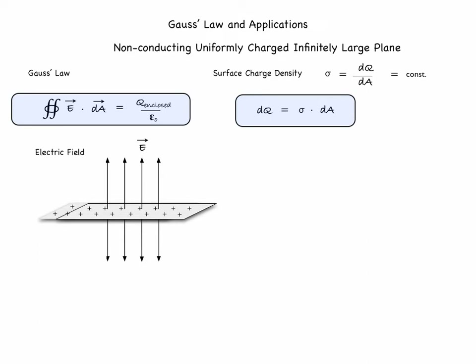We also draw the electric field lines on the other side, pointing away from the plane downward. We are now ready to choose a Gaussian surface, which in this case will be a cylinder. We typically pick a surface that follows the symmetry of the charges — here the plane has cylindrical symmetry, so we choose a Gaussian cylinder.